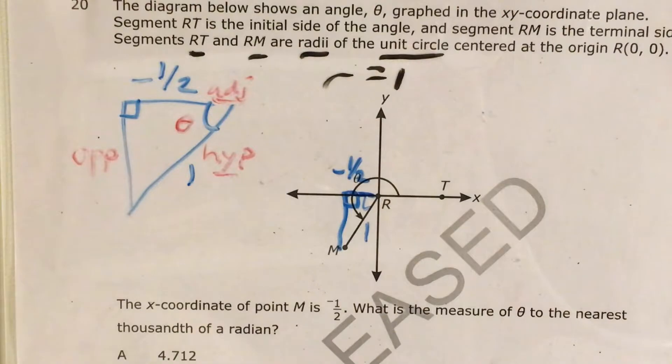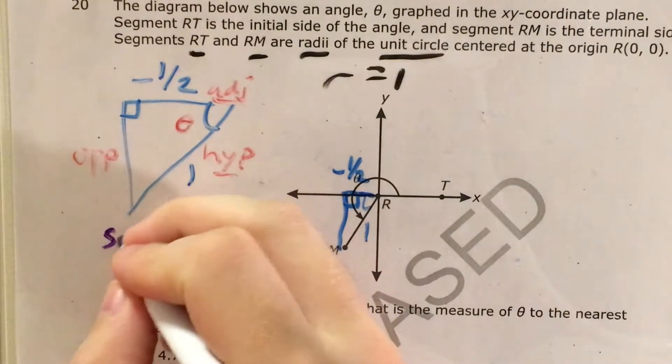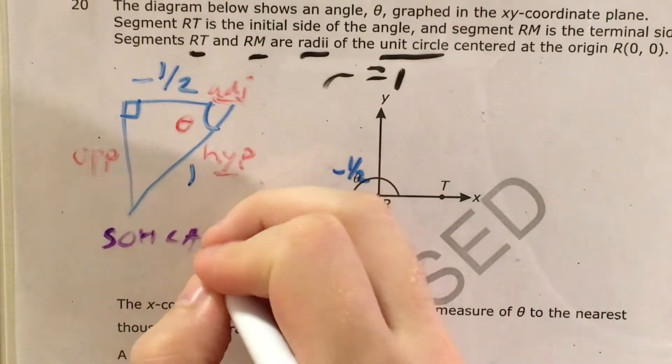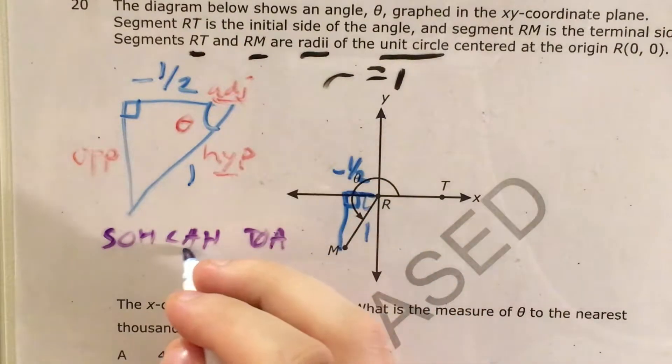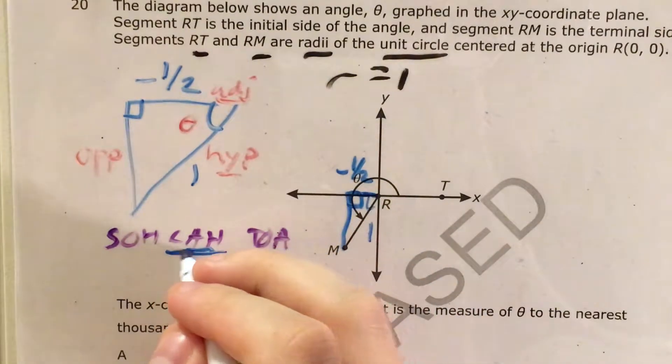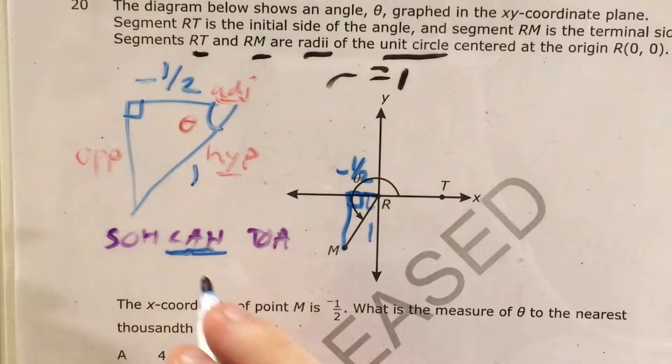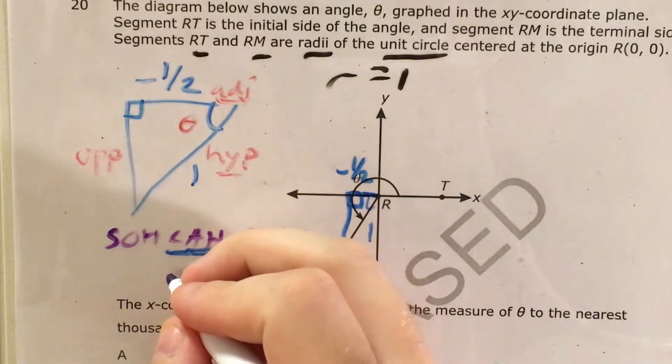Now that I know that we're relating the adjacent side and the hypotenuse to this angle, you might have heard this memory trick, SOH-CAH-TOA. It stands for some old hippie, caught another hippie, tripping over Ashley. Adjacent hypotenuse, that's this A-H, and then the caught another hippie part of the SOH-CAH-TOA memory trick says that we're looking at cosine.